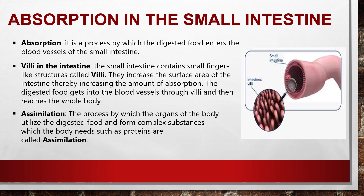Because villi are finger-like projections, the inside surface area is increased, so when the size increases it can absorb more digested food and the absorption rate increases. The digested food gets into the blood vessels through the villi and then reaches the whole body. So first the digested food comes to the finger-like projections called villi, and from villi it goes to the blood vessels in the small intestine.